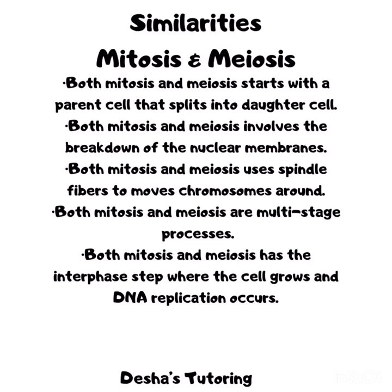Going through the steps in this tutorial, we can see that mitosis and meiosis have some similarities. Both start with a diploid parent cell that splits into daughter cells. Both involve the breakdown of the nuclear membrane. Both use spindle fibers to move chromosomes around. Both are multi-stage processes with the stages: interphase, prophase, metaphase, anaphase, and telophase. And both have an interphase step where the cell grows and DNA replication occurs.